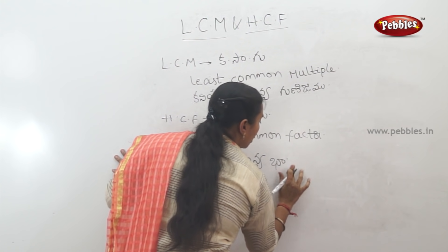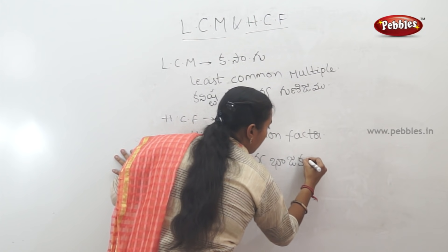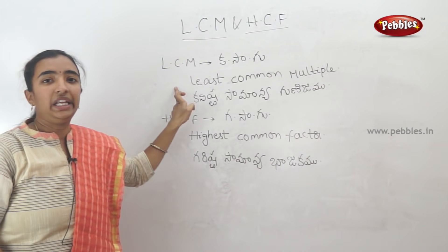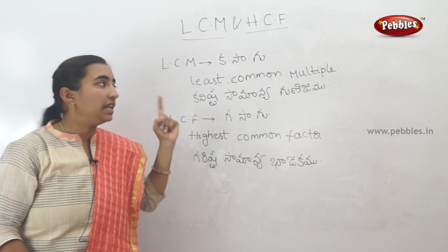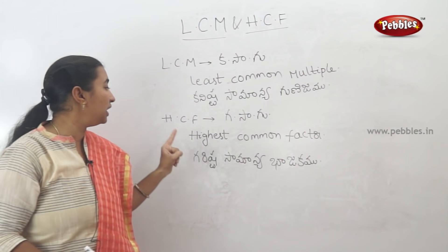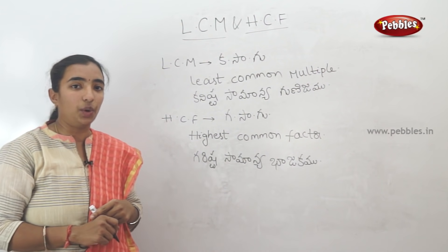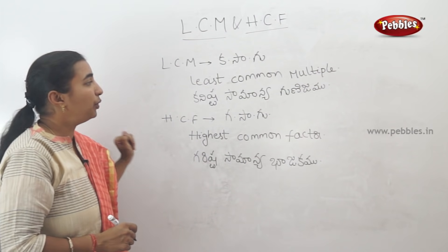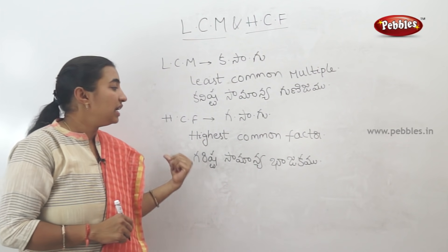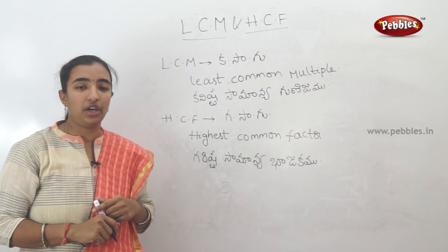LCM is the Least Common Multiple — Kanishta Samanya Gunijamu. HCF is the Highest Common Factor — Garisht Samanya Bajakhamu. Now we will look at some examples to find out LCM and HCF using an easy method, rather than the normal common method.